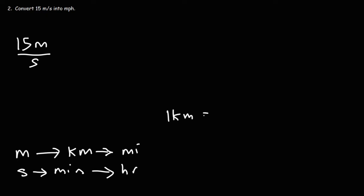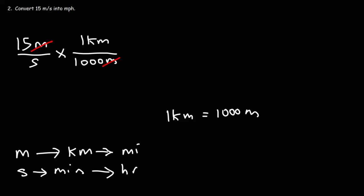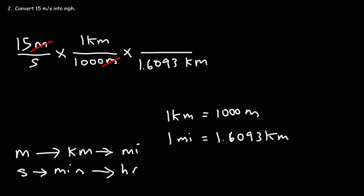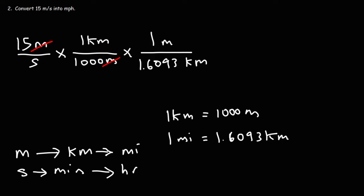We know that one kilometer is equal to 1,000 meters. We're going to put the 1,000 meters on the bottom and the kilometer on top because we want those units to cancel. Next, we're going to convert kilometers to miles. From the last example, we saw that one mile is equal to 1.6093 kilometers. So we're going to put 1.6093 kilometers on the bottom and the other part of the conversion factor on top. So now we can cross out the unit kilometers.